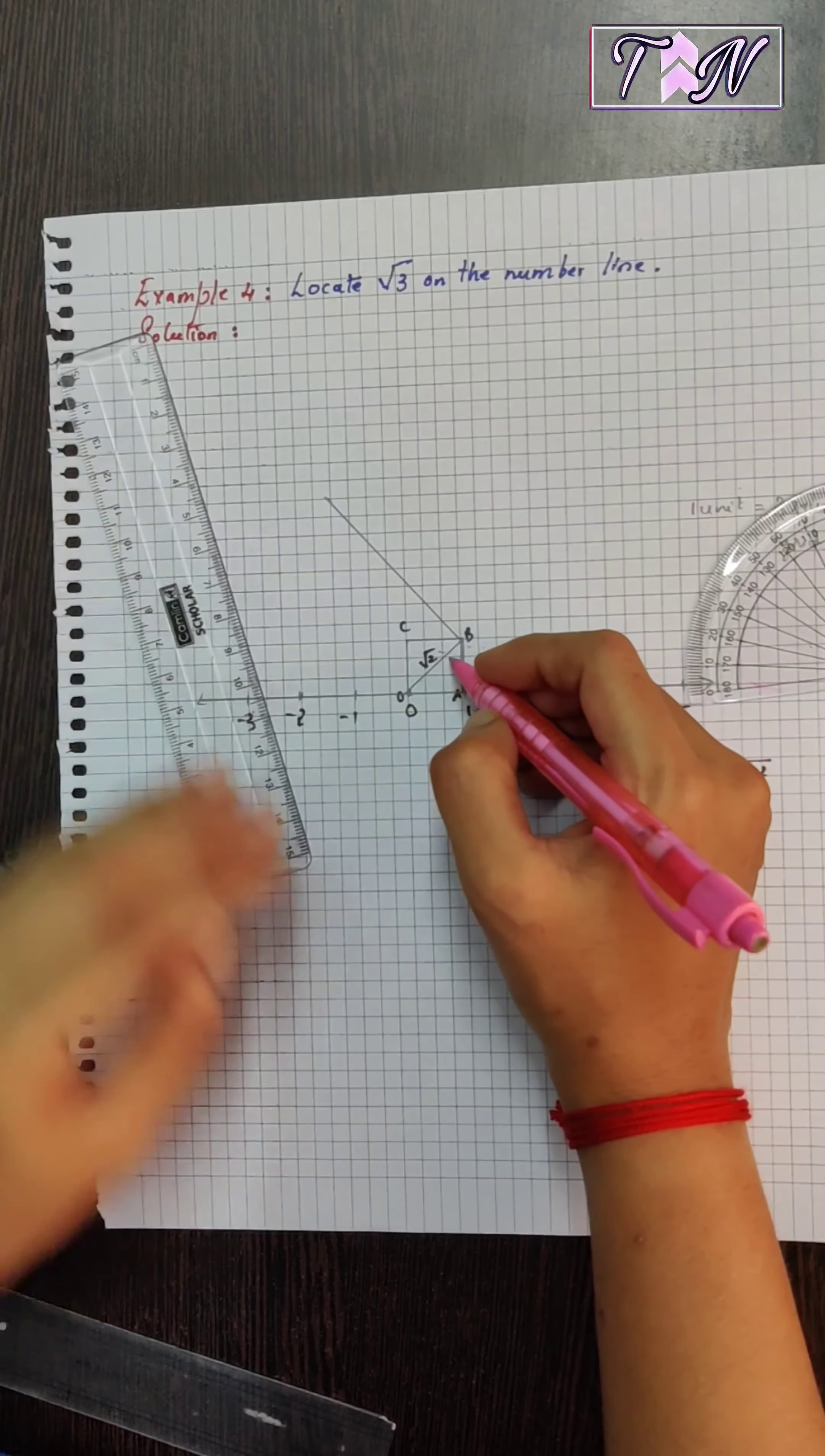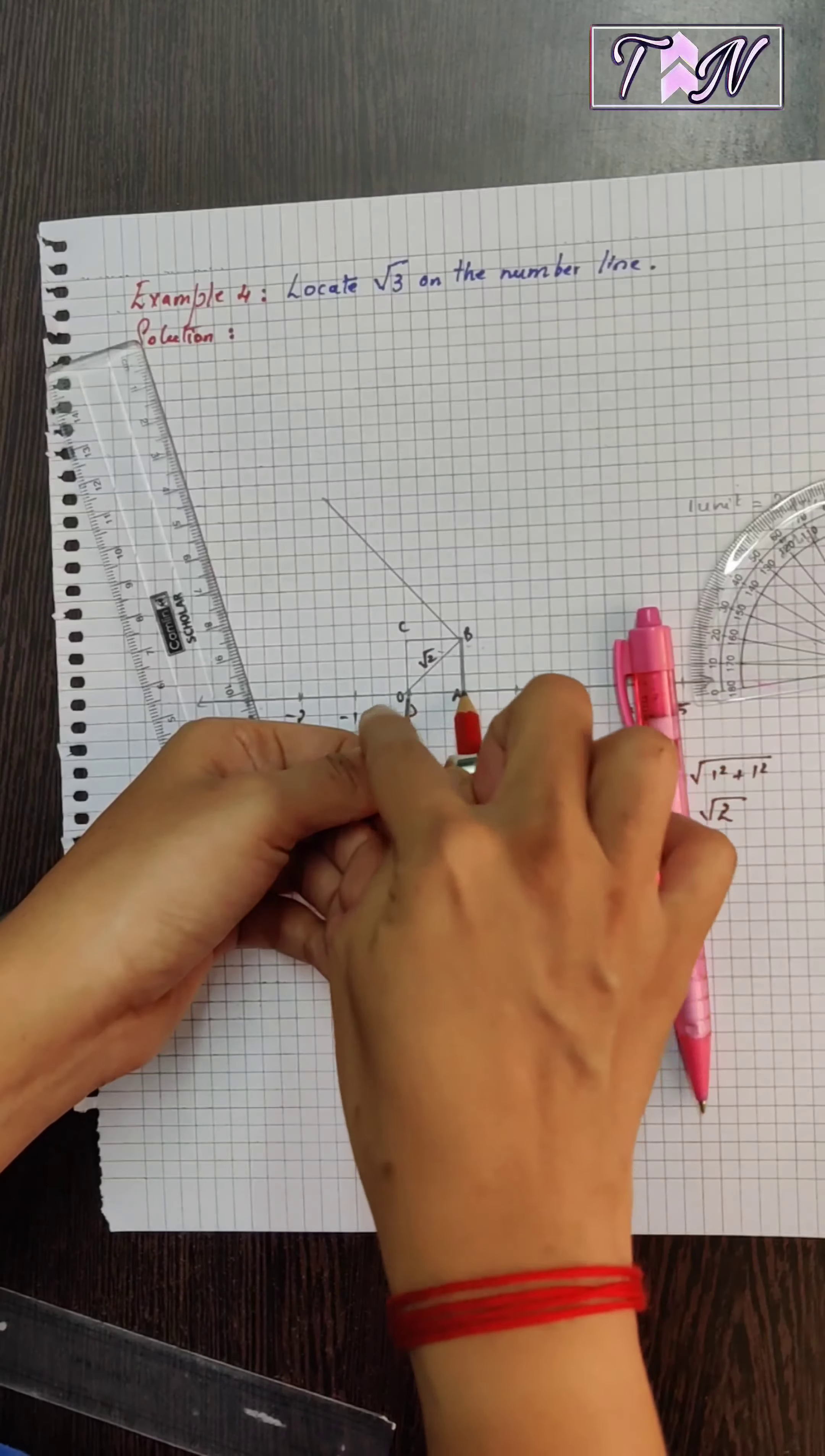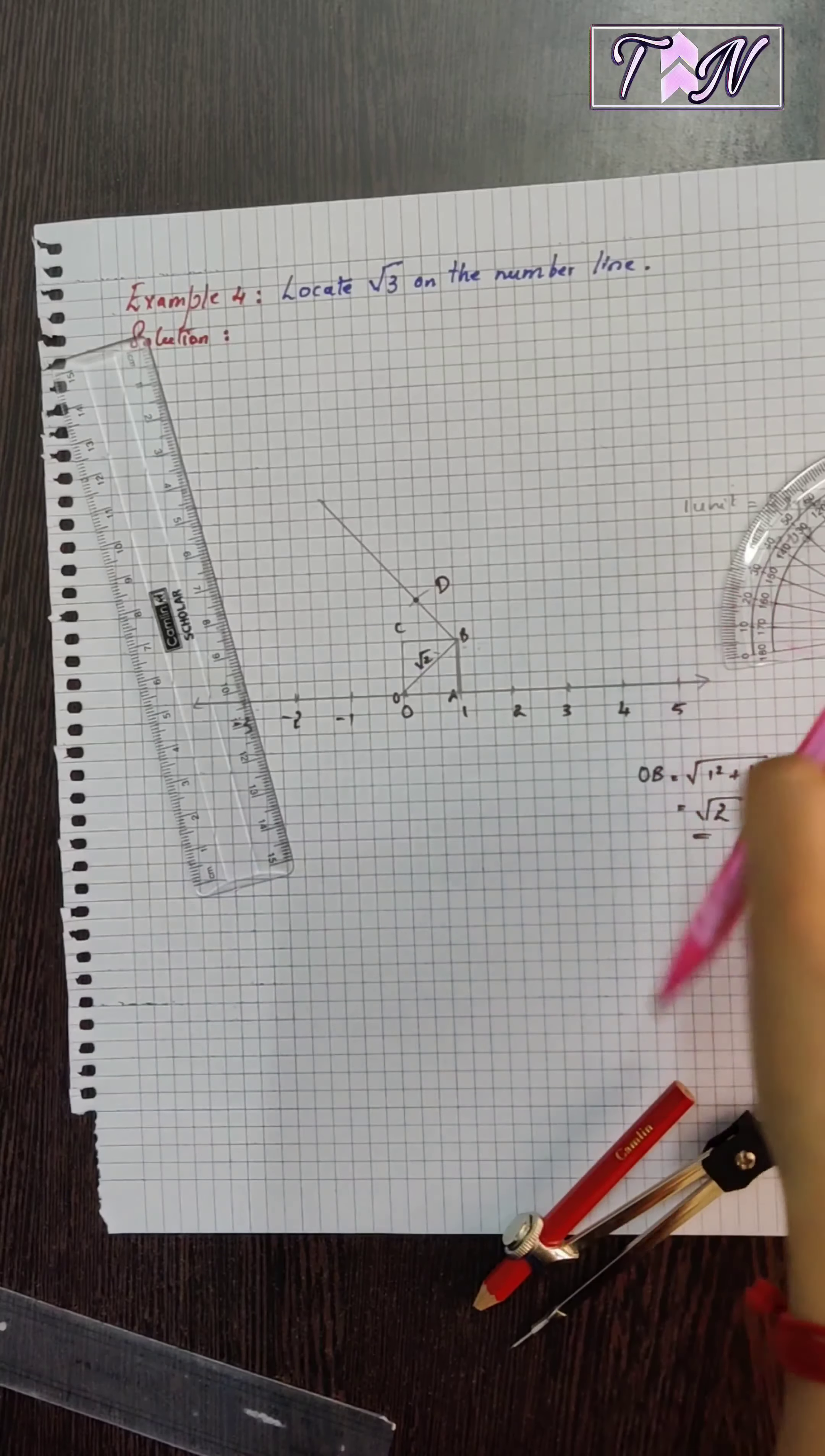So, I have to draw now 1 unit over here. What I will do is, I will take the compass, place it at O and with the radius of OA. With the radius of OA, I am taking 1 unit and marking 1 unit from B like this. And I will name this point as D.